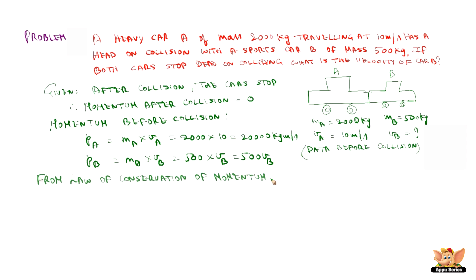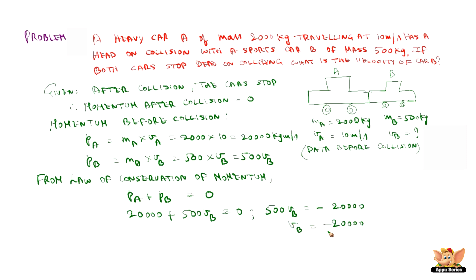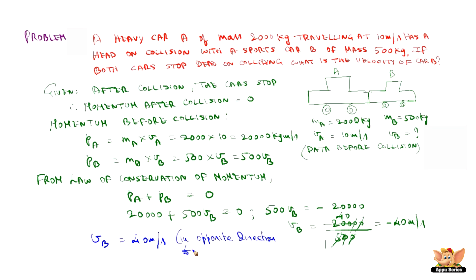From the law of conservation of momentum, total momentum before collision equals total momentum after collision. So PA + PB = 0, meaning 20,000 + 500·VB = 0. Therefore 500·VB = −20,000, so VB = −20,000/500 = −40 meters per second. VB is 40 meters per second in the opposite direction to that of car A.